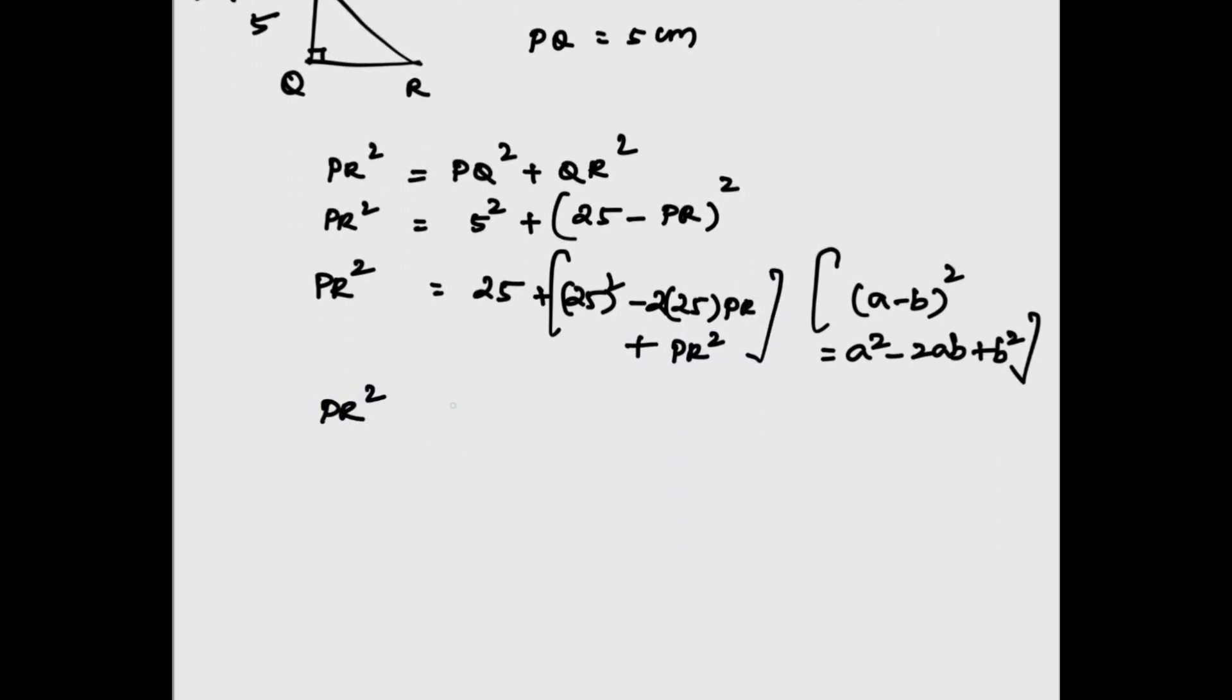PR² = 25 + 625 - 50PR + PR². PR² cancels. Taking 50PR to the opposite side, 50PR = 650.